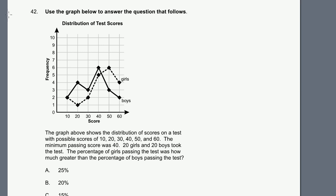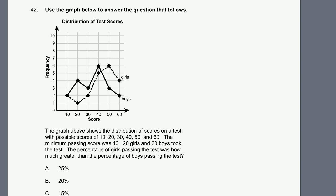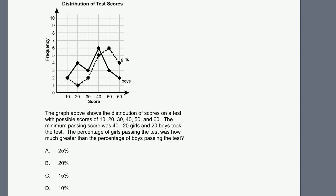Problem 42. Use the graph below to answer the question that follows. Distribution of test scores. The graph above shows the distribution of scores on a test with possible scores of 10, 20, 30, 40, 50, and 60. Those are the only possible scores. The minimum passing score was 40. So this is the minimum passing score. You have to get at least a 40 to pass. 20 girls and 20 boys took the test. The percentage of girls passing the test was how much greater than the percentage of boys passing the test?